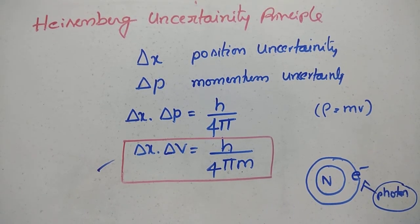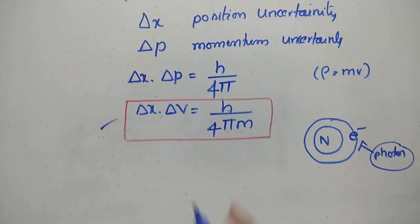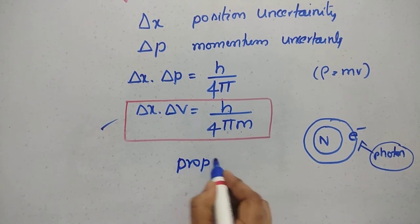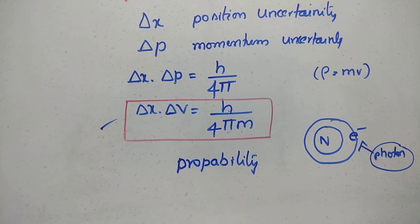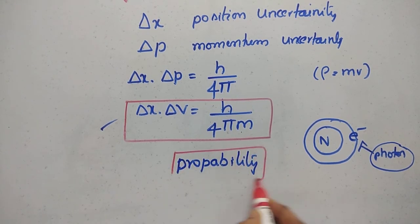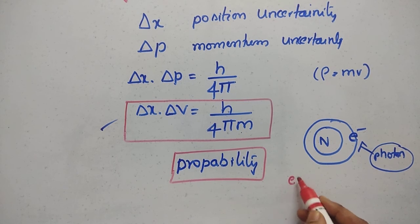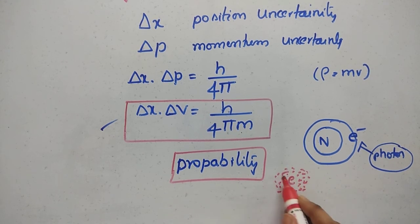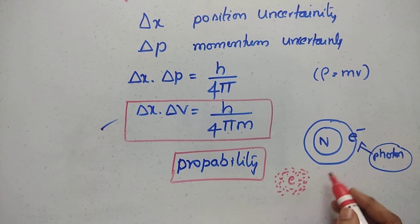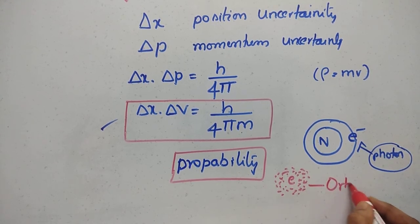Finally, we can talk about probability. The probability of finding an electron — the probability of finding the electron is nothing but the orbital.